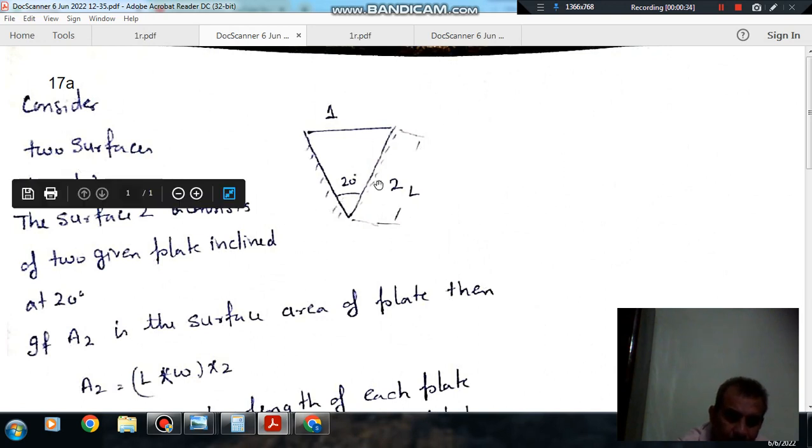Options are: a) 0.8, b) 1.17, c) 0.66, d) 1.34. So this is surface 2, and suppose it consists of two plates which are having angle 20 degrees, and this is surface 1. Now we have to find out the shape factor of this plate to this plate. Initially we take this as a single surface and this as a separate surface and find out the shape factors F11 and F22.